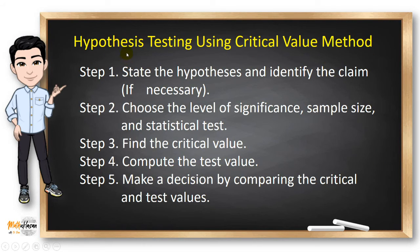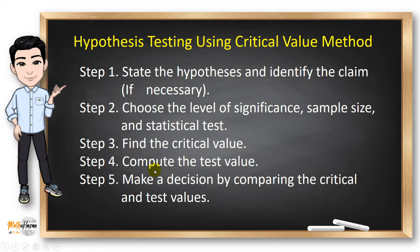If you want to test the hypothesis using the critical value method, you can use these general steps. First, state the hypothesis and identify the claim if necessary. Second, choose the level of significance, sample size, and statistical test, because these values determine our critical value and the type of distribution to use. After finding the critical value, compute the test value. Then make a decision by comparing the critical value and the test value.